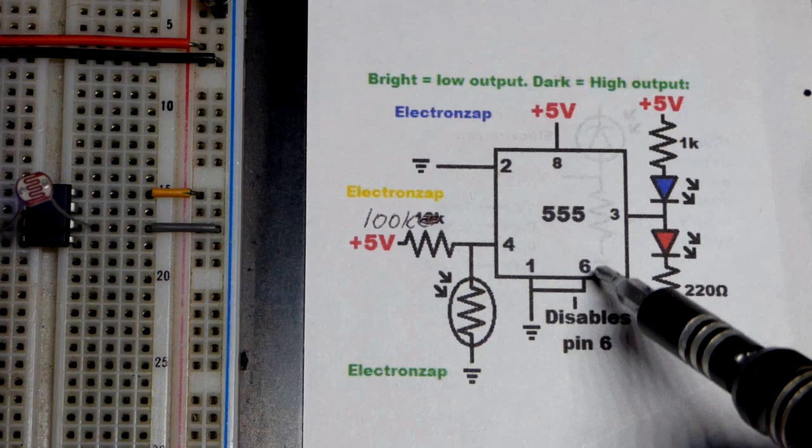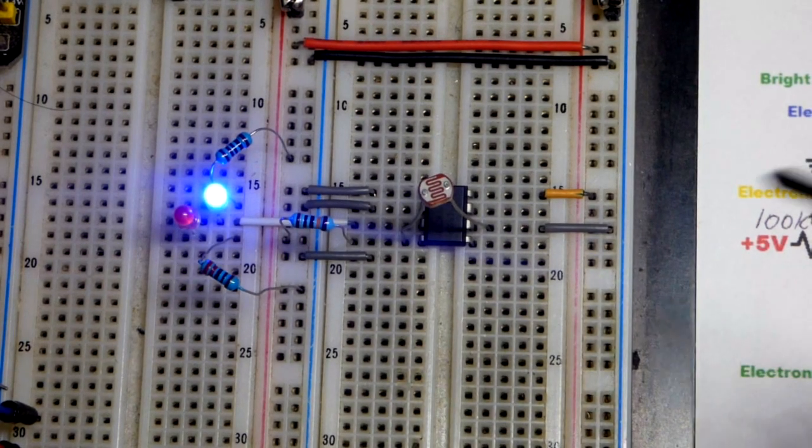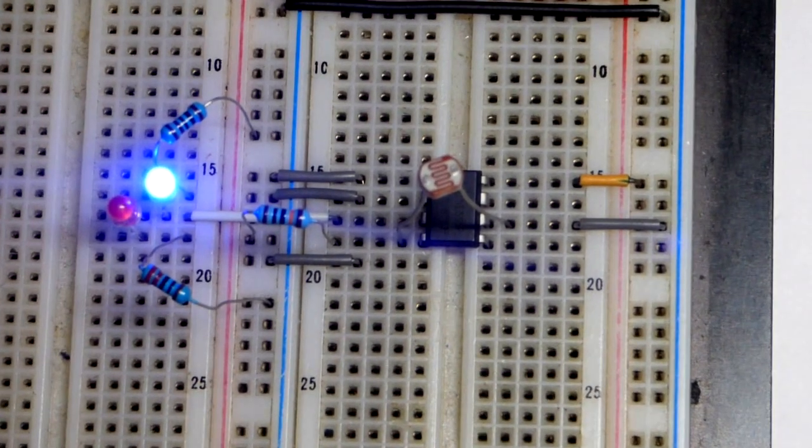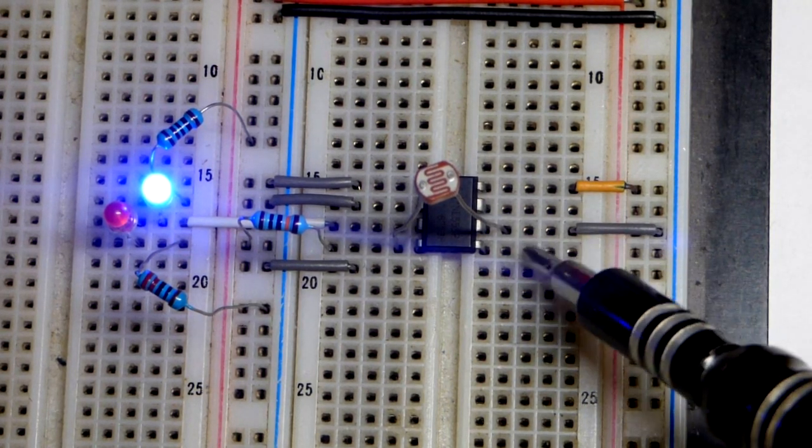Pin 6 is the threshold pin, waiting for two-thirds of the supply voltage. Since we have pin 6 connected to the negative supply to prevent it from doing anything, we'll look at the circuit.